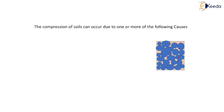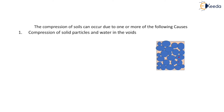The compression of the soil can occur due to one or more of the following causes. The first cause is compression of solid particles and water in the void. The size of the solid particles is very small, so this compression is very minor. Also, water is incompressible. That is why compression of soil due to this first reason is very minor and can be neglected.